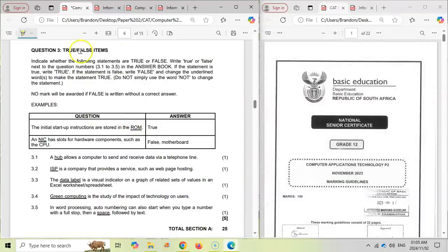And then in the CAT paper, they have a true and false question. In this scenario, they've said we must write down the word true or the word false. Now you do not get a mark if you just write the word false. If you write the word false, you need to write a word that's going to replace the underlined word.